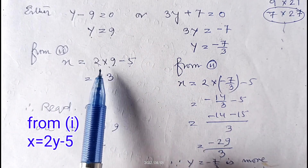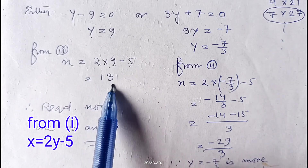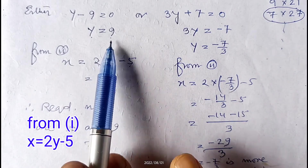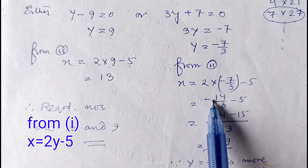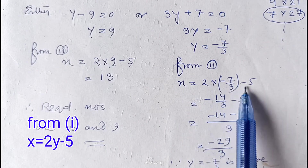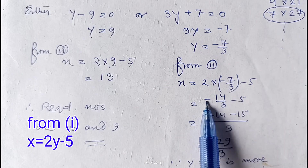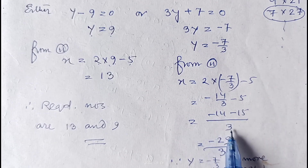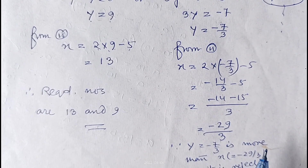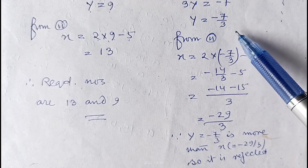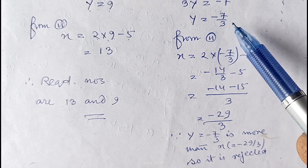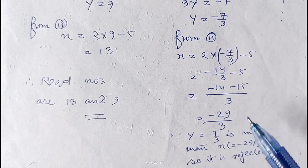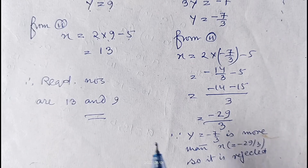From equation 2, x = 2y − 5. If y = 9, then x = 2(9) − 5 = 18 − 5 = 13. So we get numbers 13 and 9. If y = −7/3, then x = −14/3 − 5 = (−14 − 15)/3 = −29/3. But we assumed x is the bigger number; here −7/3 > −29/3, contradicting our assumption. So this solution is rejected. The required answer is 13 and 9.